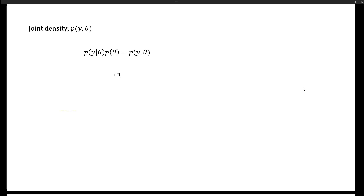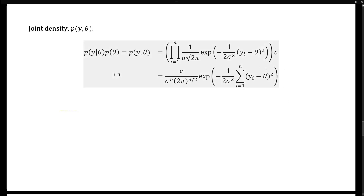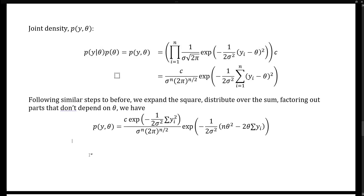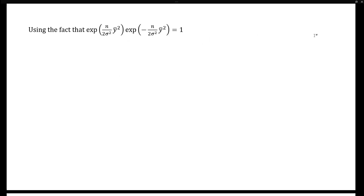Before we try to find the posterior density, let's start by manipulating the joint density p of y and theta. The joint density may be written as the product of the data density and the prior — in our context, the product of the marginal densities of the data multiplied by the prior c. Going through the same steps as before, we simplify our joint data density and pull out some of the constants. If we then expand the square, distribute over the sum, and factor out the constants that don't involve theta, we get the following expression. Using the fact that n over n equals 1, we can re-express the inner part of the kernel. If we factor n out of the expression, we can simplify even further.